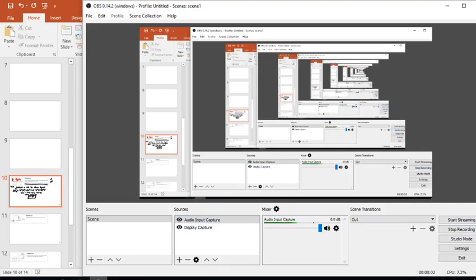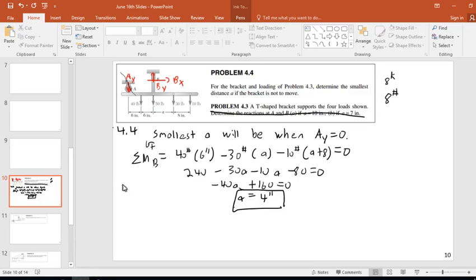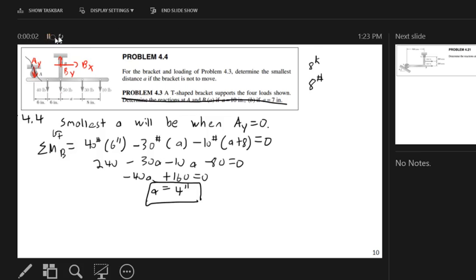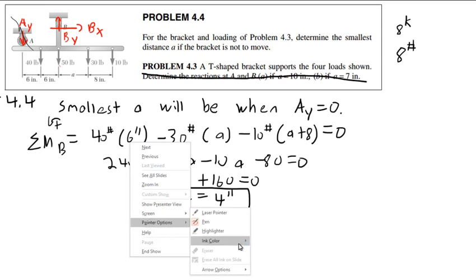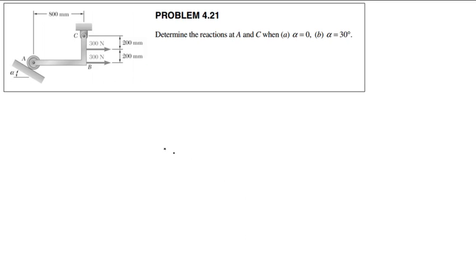Alright, here we are again for part 2. So let's go to this next problem. We have this L-bracket here, this L-angle, and we say determine the reactions of A and C when A, alpha is 0 degrees, and B, alpha is 30 degrees. Okay, so let's figure that out.